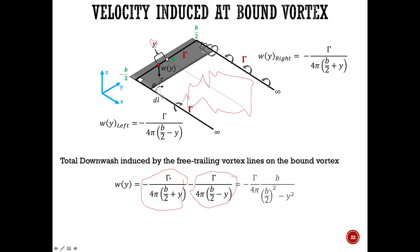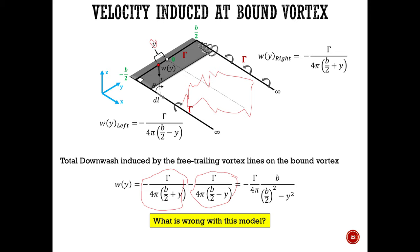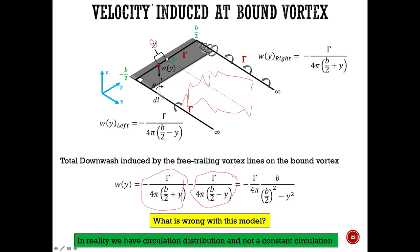Taking common denominators, you get an expression with b² over (b/2)² minus y². But there's something off about this downwash expression — pause and think about what's wrong with this model. When you solve for the downwash w(y), you get a constant downwash throughout, because circulation is not changing. In reality, on a finite wing you get a lift distribution, not a constant lift.